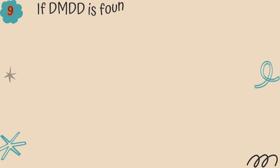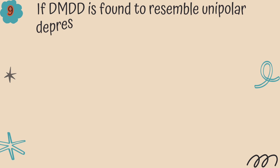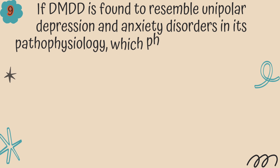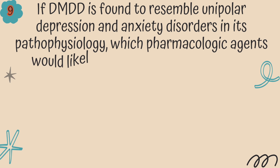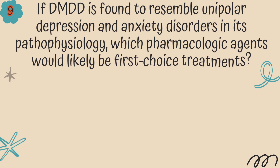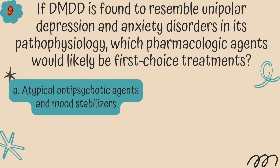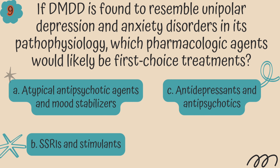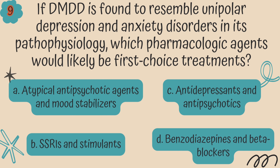Question 9. If DMDD is found to resemble unipolar depression and anxiety disorders in its pathophysiology, which pharmacological agent would likely be first-choice treatments? Is it A. Atypical antipsychotic agents and mood stabilizers, B. SSRIs and stimulants, C. Antidepressants and antipsychotics, or D. Benzodiazepines and beta-blockers?